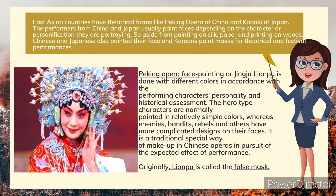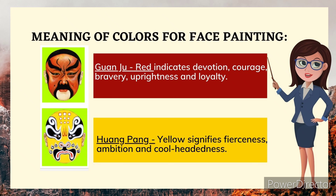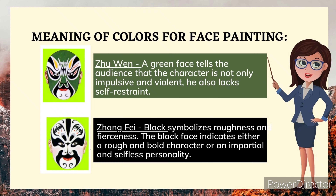Hero type characters are normally painted in relatively simple colors, whereas enemies, bandits, rebels, and others have more complicated designs. It is a traditional special way of makeup in Chinese operas. Originally, Lianpu is called the 'false mask.' Meaning of colors for face painting: Guan Yu — red indicates devotion, courage, bravery, uprightness, and loyalty. Huang Peng — yellow signifies fierceness, ambition, and cool-headedness. Zhu Wen — a green face tells the audience that the character is not only impulsive and violent, but also lacks self-restraint.